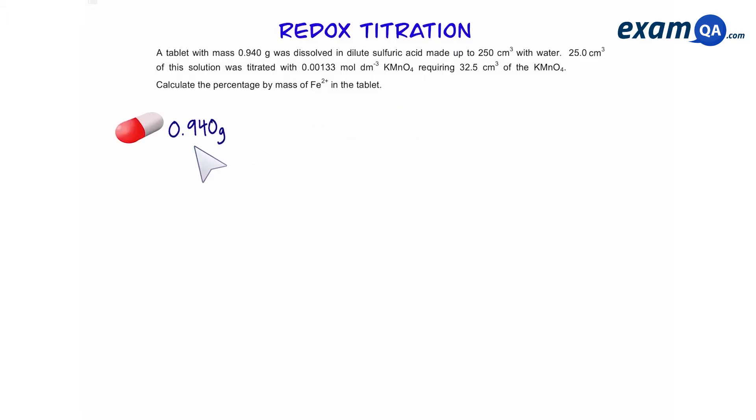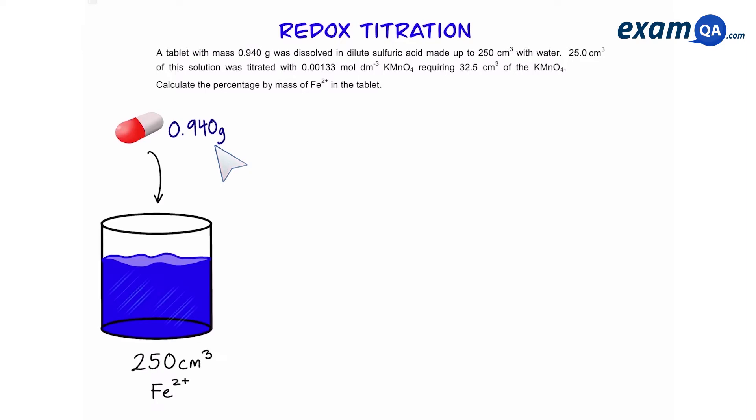So we have a mass of a tablet which was 0.94 grams. This tablet is dissolved in 250 cm³ of water. The main ion in this tablet is iron 2+, which is a reducing agent. We take 25 cm³ from that sample and titrate it with manganate, an oxidizing agent. We use 32.5 cm³ of 0.00133 mol per dm³ manganate.